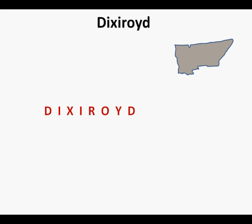The first letter in Dixieroid is D and represents domain — the allowable input values of a function. And the fifth letter, R, represents the range of a function. Domain and range are related words that have opposite meanings: domain meaning the real x values or independent values of a function, and range meaning the y or dependent values of a function or relation.